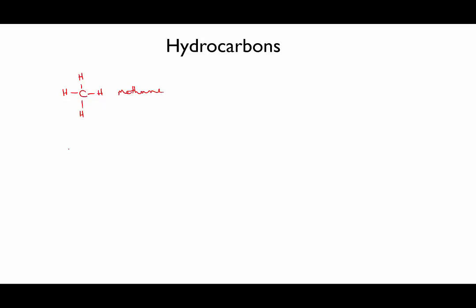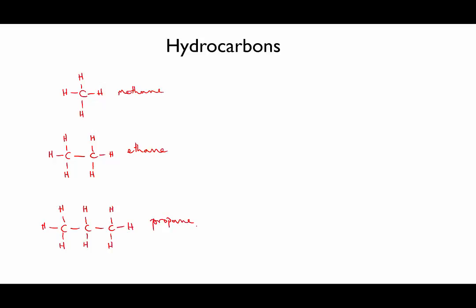Then you could take two carbon atoms — to fill in the hydrogens you need six of those. This is called ethane. Add another carbon and you have C3H8, which is propane. You can see that we can build up a whole series just by adding more and more carbon atoms to the chain. So let's look at this series in more detail.